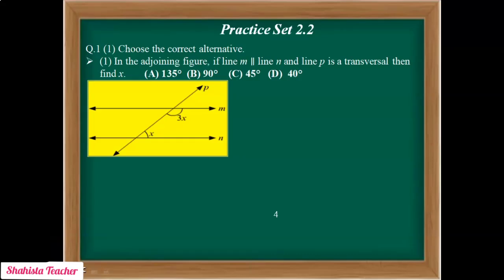Now students, after learning all the properties of angles formed by two parallel lines and a transversal, let's solve Practice Set 2.2. Last class we solved Practice Set 1.1. Today we learned the property of corresponding angles, property of interior alternate angles, property of interior angles, and property of exterior angles. Practice Set 2.2 is based on all those properties. Question number 1: Choose the correct alternative.